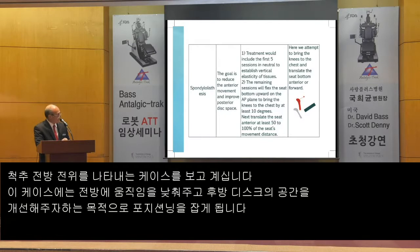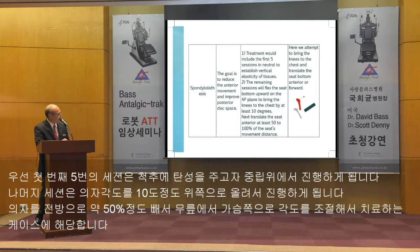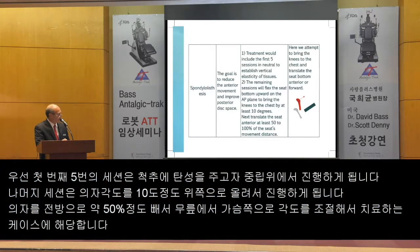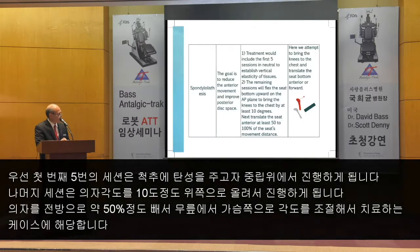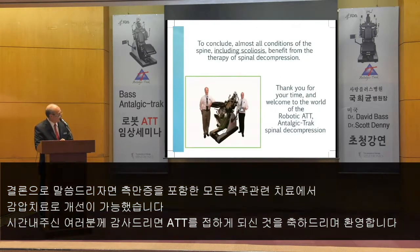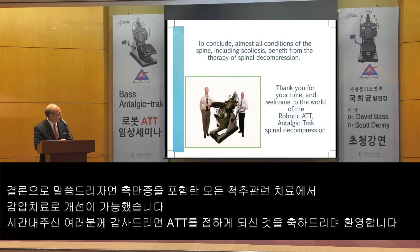Spondylolisthesis. The goal is to reduce anterior movement and improve posterior disc space. Begin the first five sessions in neutral to establish vertical elasticity of tissues. The remaining sessions flex the seat bottom upward and anteriorly — upward on the AP plane to bring the knees to the chest by at least ten degrees, then translate the seat anteriorly at least 50 to 100 percent of the seat's movement distance. To conclude, almost all conditions of the spine, including scoliosis, benefit from the therapy of spinal decompression. Thank you for your time and welcome to the world of intelligent, robotic ATT.